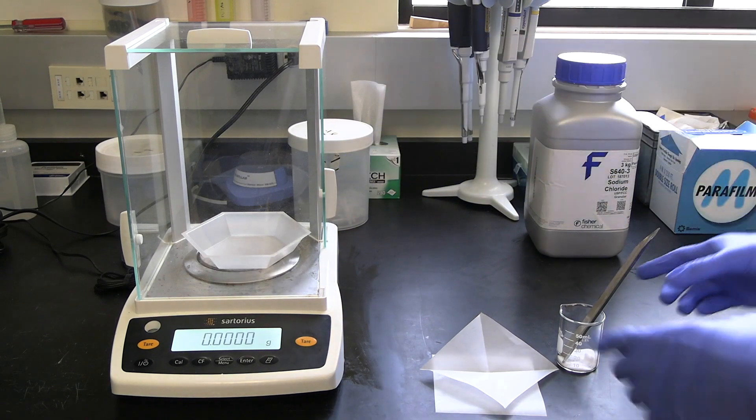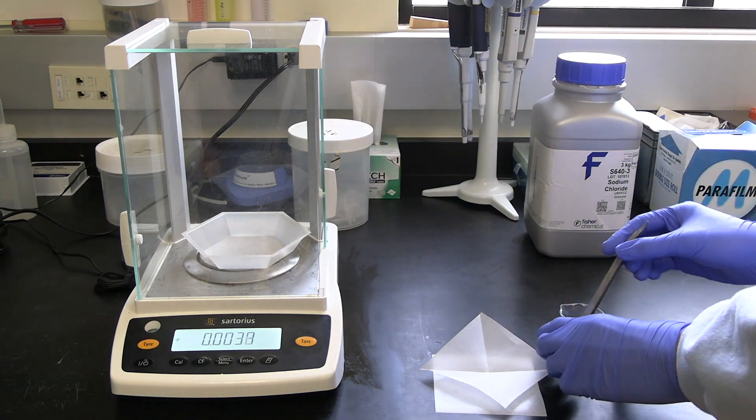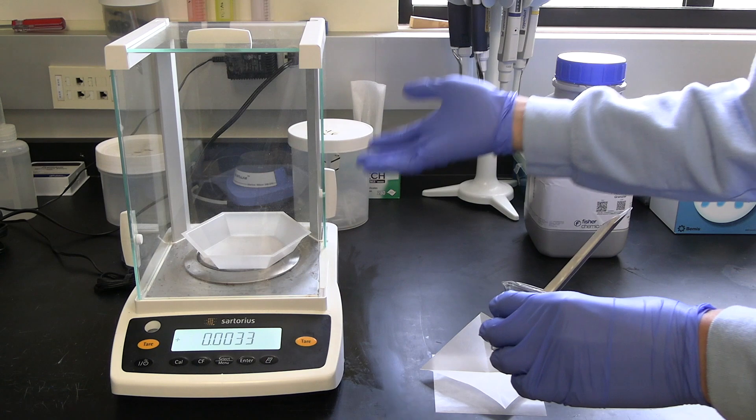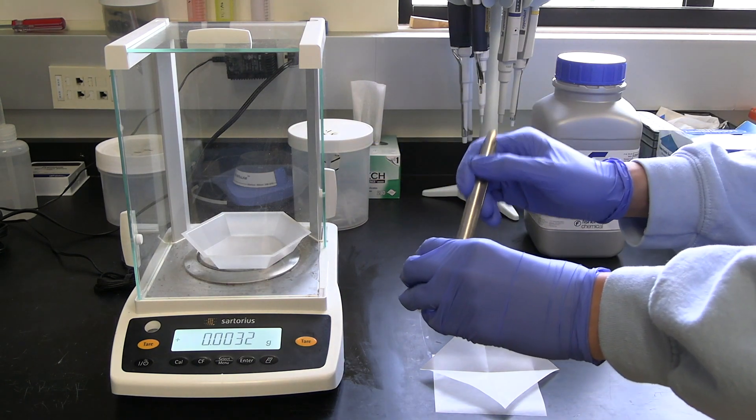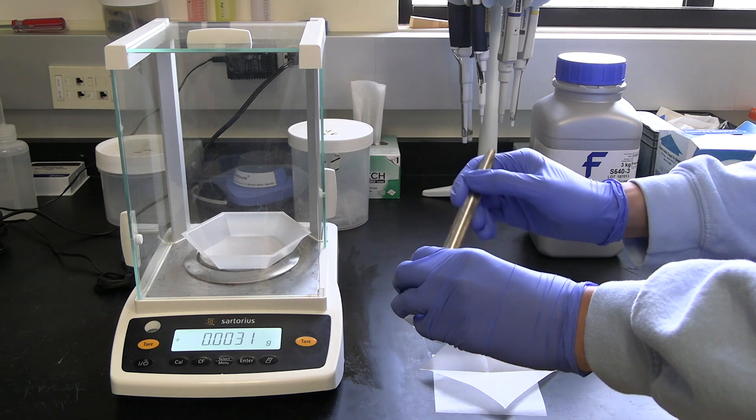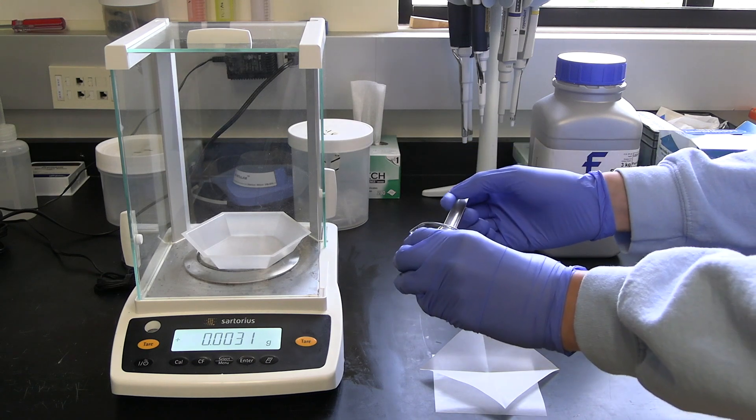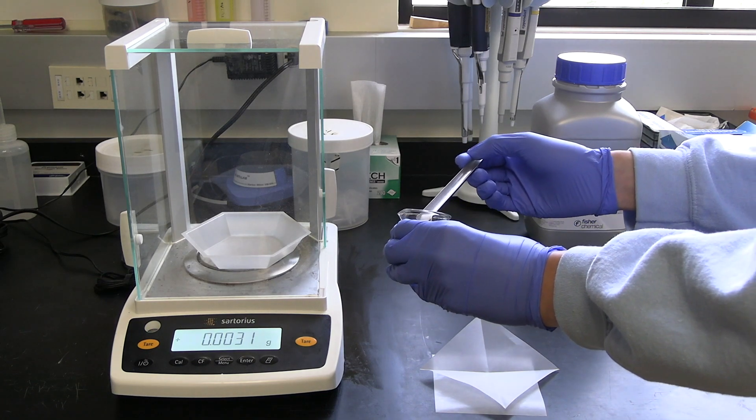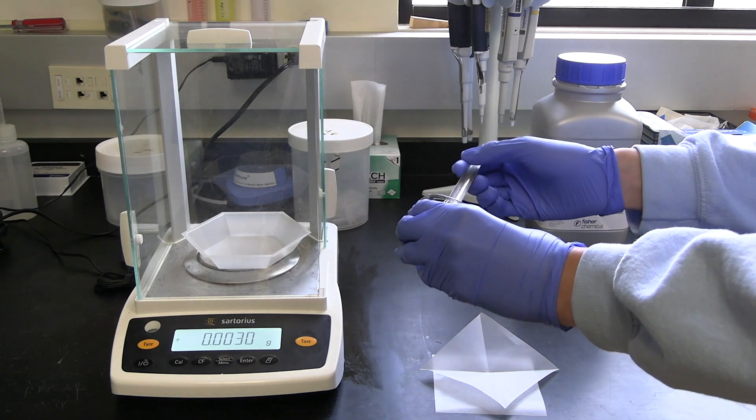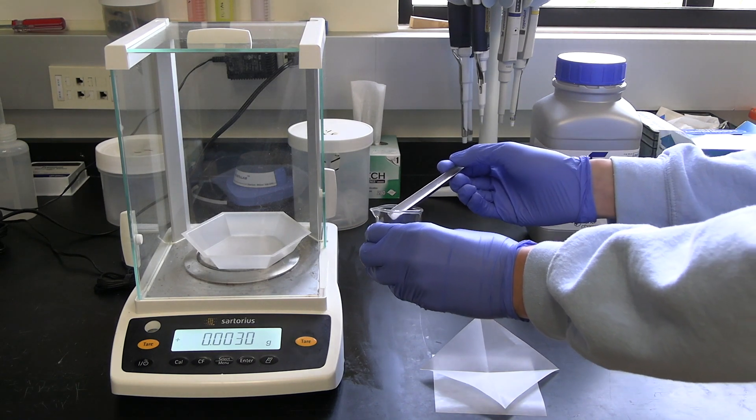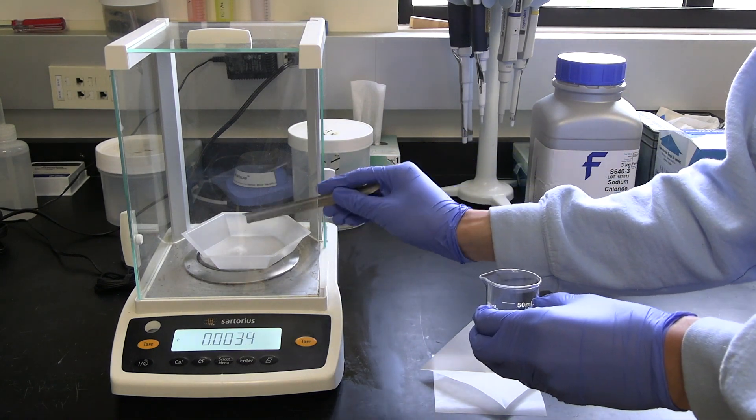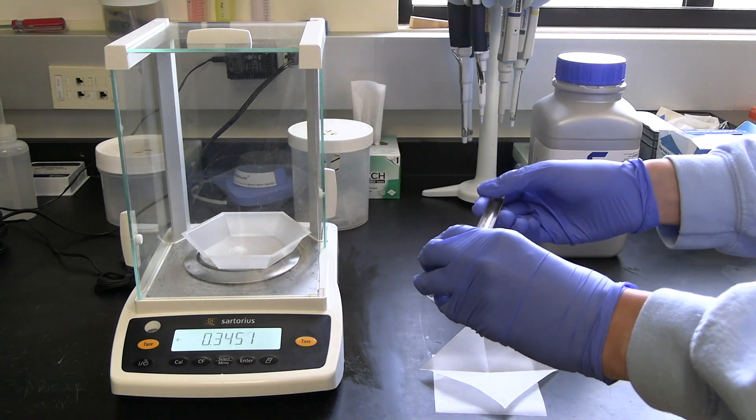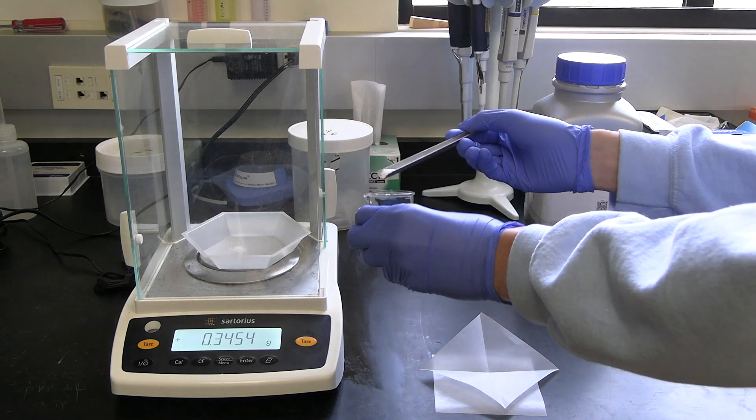And so once that's done, we can reopen up one of these doors. And do make sure the door is closed when you're doing the weighing. It will affect the measurement. Just breaking up some of the salt pieces. And then we're going to just put an arbitrary amount of salt into our weigh boat, making sure not to spill any outside of the weigh boat.